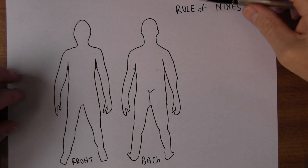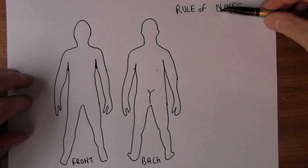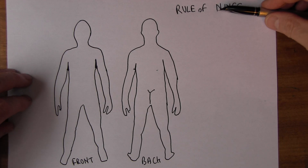The rule of nines is about body surface area. How can we approximate the body surface area involved in a particular burn? Using nines, we can do that very simply.